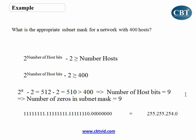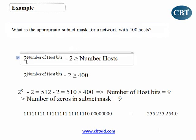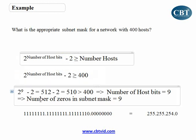Now, if I look at the previous example — I gave you the question: what is the appropriate subnet mask for a network with 400 hosts? I used the formula two to the power of number of host bits should be larger than number of hosts, without the minus two. Now I'm going to modify it. With the minus two: two to the power of number of host bits minus two should be greater than or equal to 400. If I use nine, I get 512 minus 2, meaning 510 addresses, which is larger than 400. So, the number of host bits is nine.